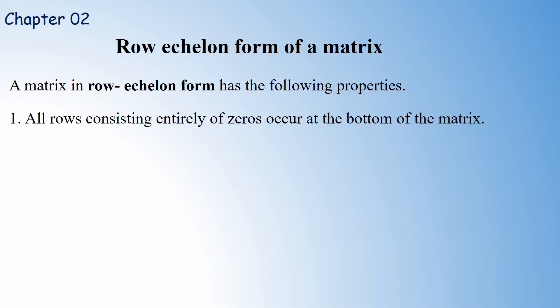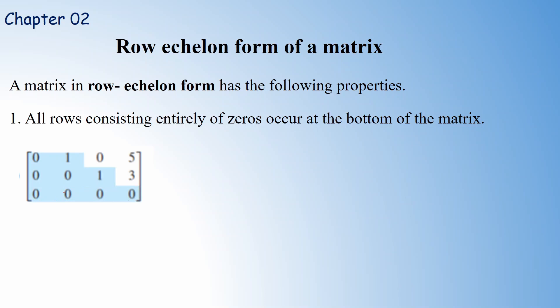The first property is that all rows consisting entirely of zeros occur at the bottom of the matrix. If you have a zero row in a matrix, it should appear only at the bottom. For example, looking at this matrix, the zero row appears at the bottom. That is the first condition for row echelon form.